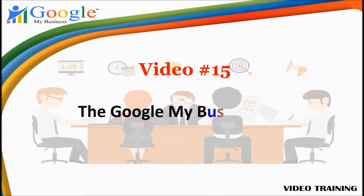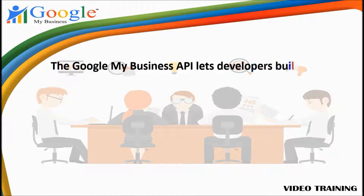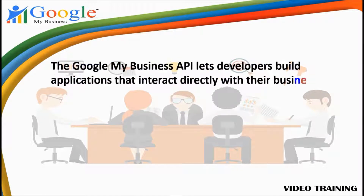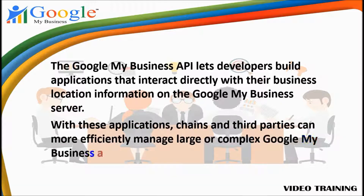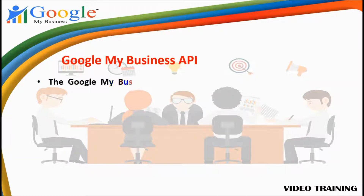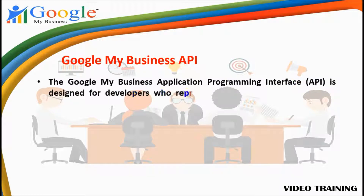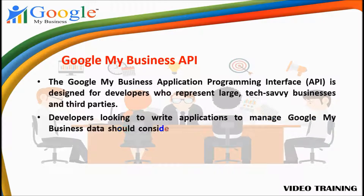Video 15: the Google My Business API. The Google My Business API lets developers build applications that interact directly with their business location information on the Google My Business server. With these applications, chains and third parties can more efficiently manage large or complex Google My Business accounts. The API is designed for developers who represent large, tech-savvy businesses and third parties.